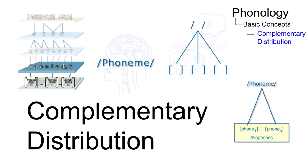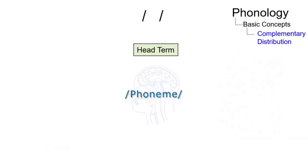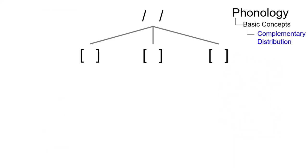Complementary distribution is a concept that is associated with a physical view of the phoneme, which is a head term of a family of speech sounds, and whose members are phonetically similar and stand in complementary distribution.